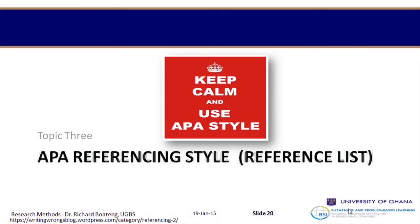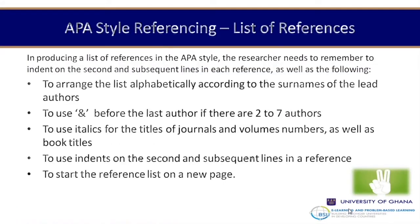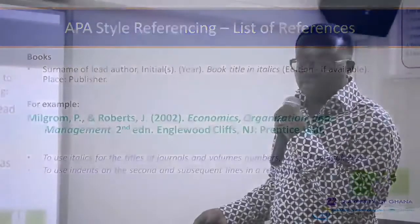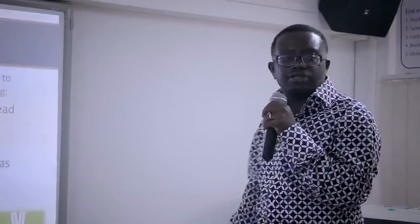For the reference list at the end of your article: arrange in alphabetical order; use the ampersand sign before the last author if there are two to seven authors; use italics for titles of journals, volume numbers, and book titles; use an indent for second and subsequent lines in each reference; and start the reference list on a new page — that is very important in APA style.